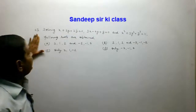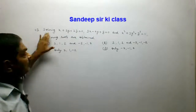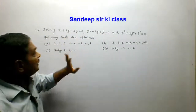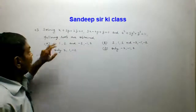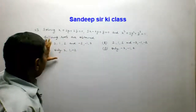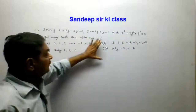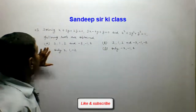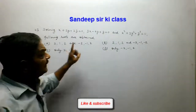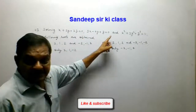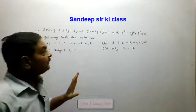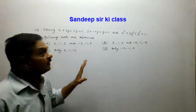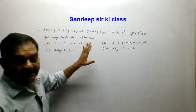Question number 43. Three equations are given in X, Y, Z and following roots are obtained. We have four options given. Solving these three equations by conventional method or subjective method is a very lengthy procedure.